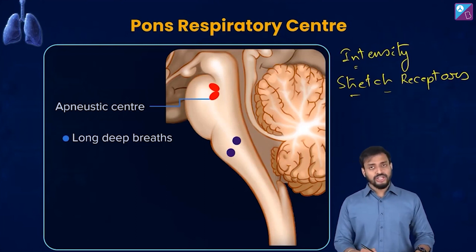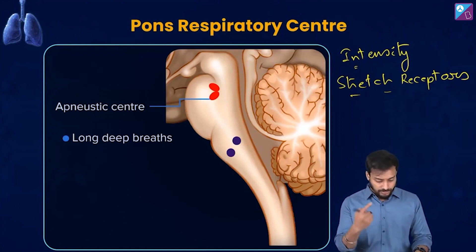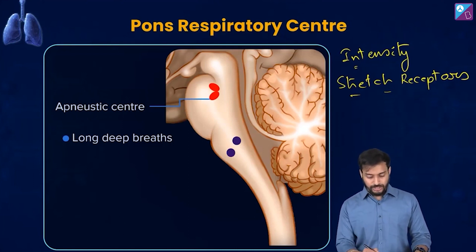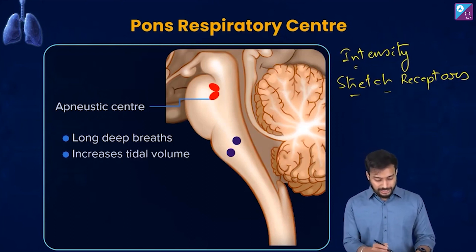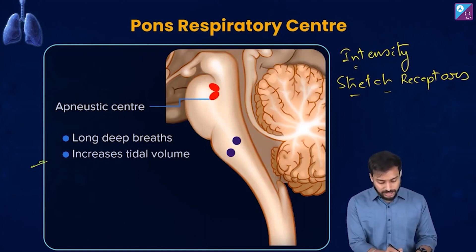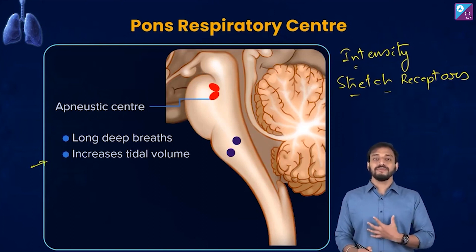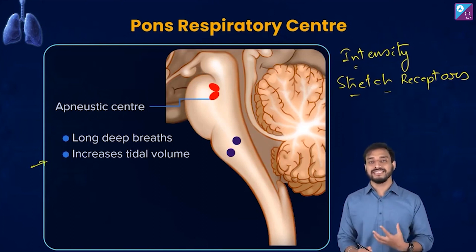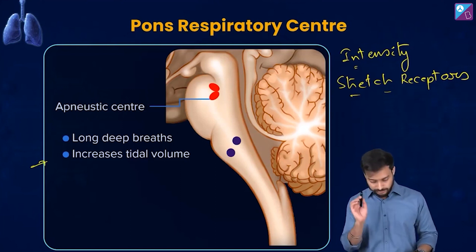The pneumotaxic center also signals and regulates the apneustic center. Since the apneustic center helps in deep, long breaths, it increases the tidal volume. The pneumotaxic center can moderate the functions of the respiratory rhythm center.